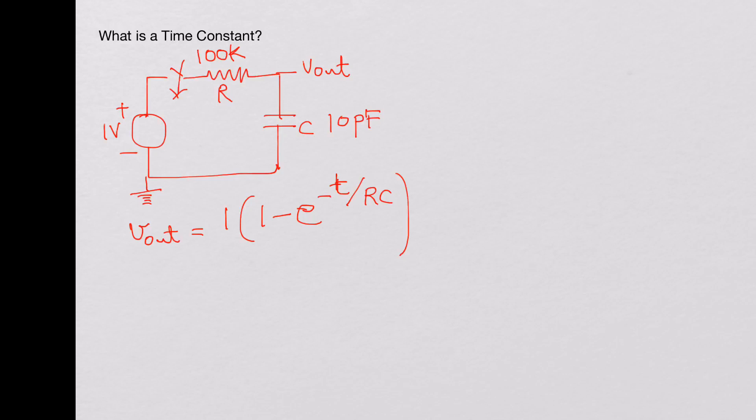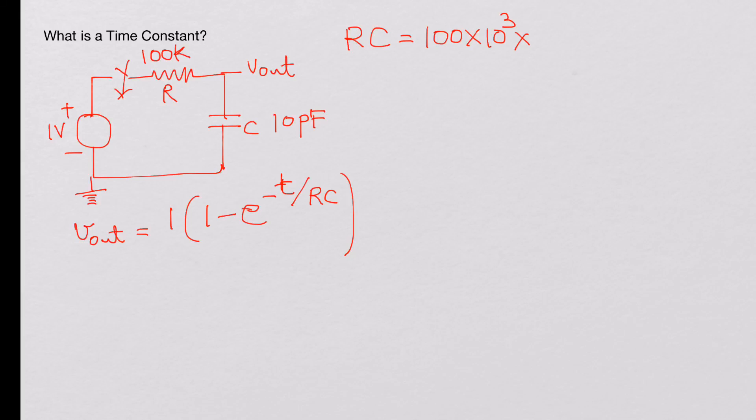Now let's calculate what RC is. In this case, RC is 100 kilo ohms multiplied by 10 picofarads, which is 10 multiplied by 10 to the minus 12.